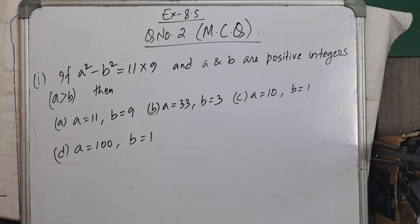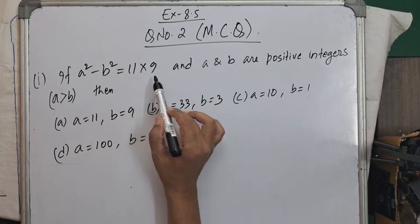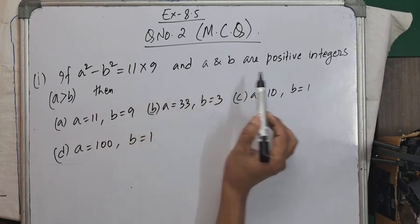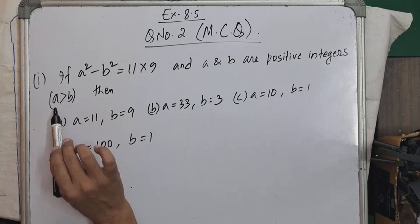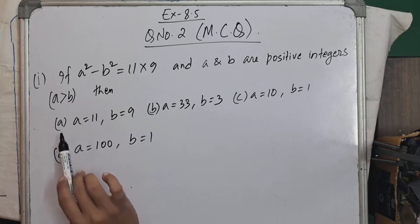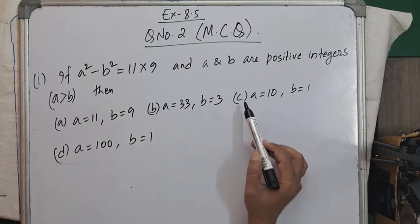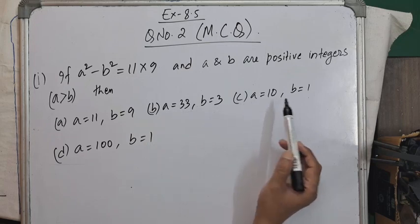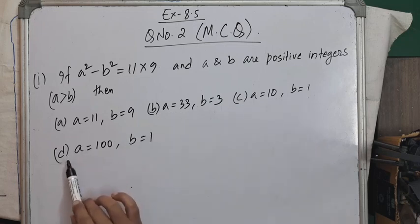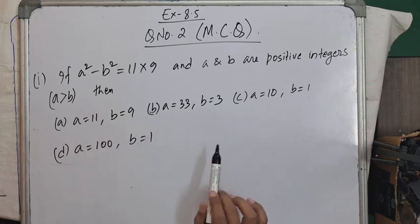Let's start exercise 8.5 question number 1, MCQ. If a² - b² = 11 × 9 and a and b are positive integers with a > b, we are asked to find the value of a and b. The options are: (A) a=11, b=9; (B) a=33, b=3; (C) a=10, b=1; (D) a=100, b=1.